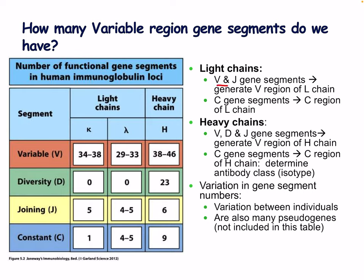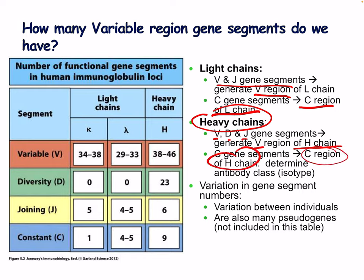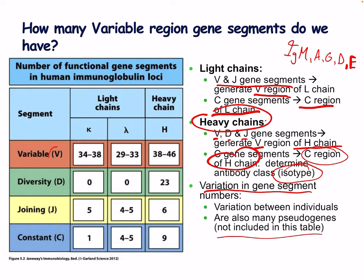For light chains, V gene segments generate the V region and constant gene segments generate the C region. For heavy chains, V, D, and J gene segments generate the variable heavy region, while C gene segments determine the C region of the heavy chain and determine the antibody isotype — IgM, IgA, IgG, IgD, and IgE. There is also variation between individuals and many pseudogenes not included in standard tables.